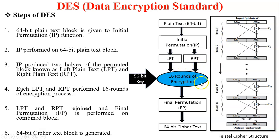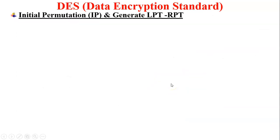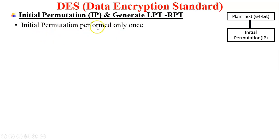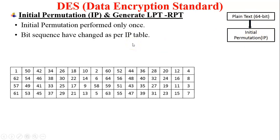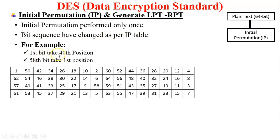Before the 16 rounds of encryption, let's see the initial permutation and how it generates LPT and RPT from the 64-bit plain text. Initial permutation is performed only once in the DES process. Before initial permutation, plain text is divided into 64-bit blocks. A 64-bit block is given to the IP table — the initial permutation table — and the bit sequence is changed as per the IP table. For example, the first bit takes the 40th position and the 58th bit takes the first position.